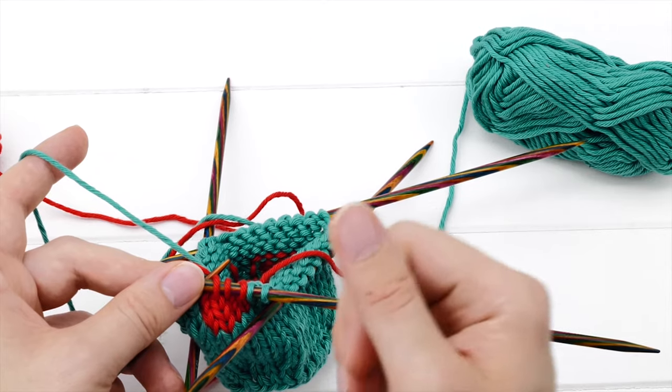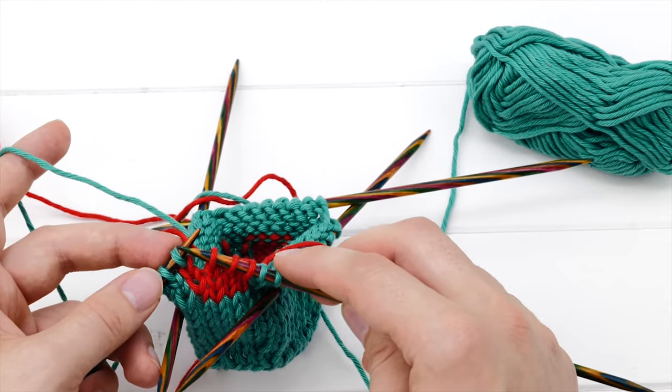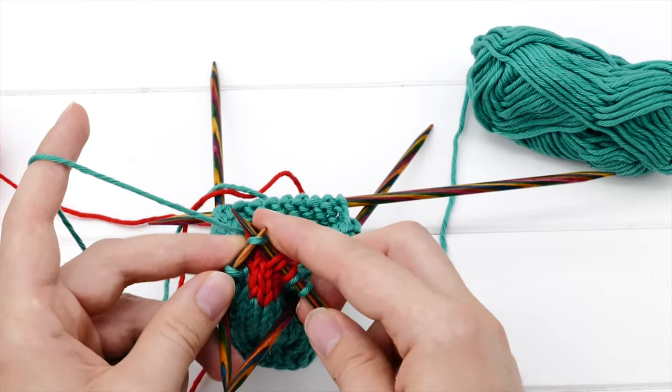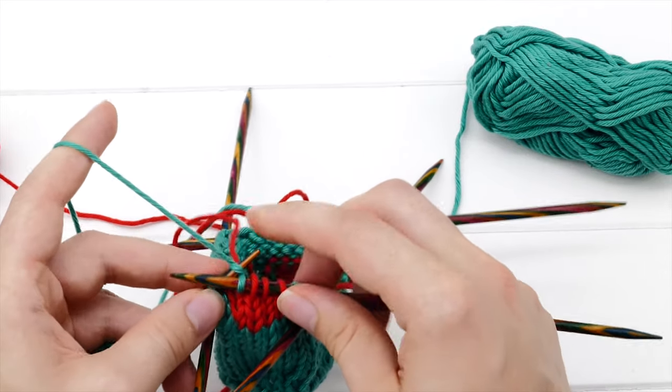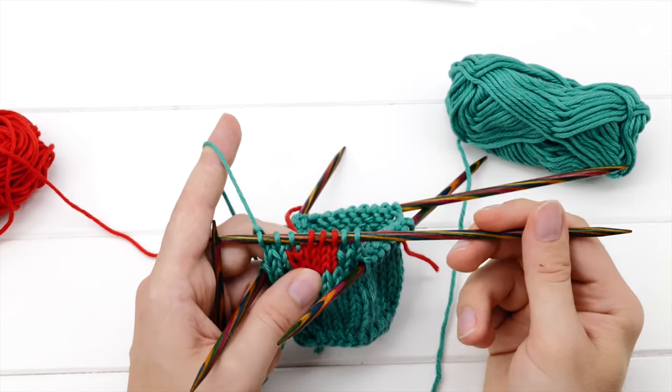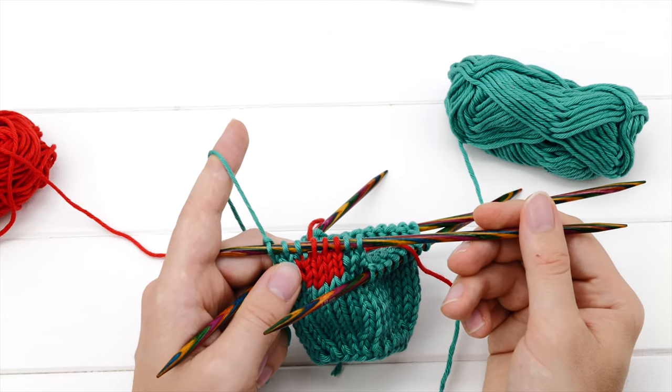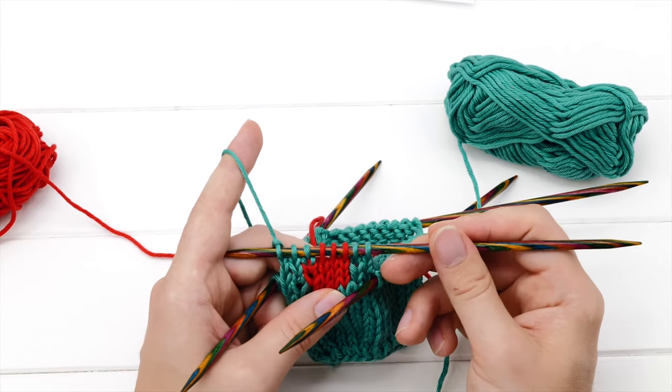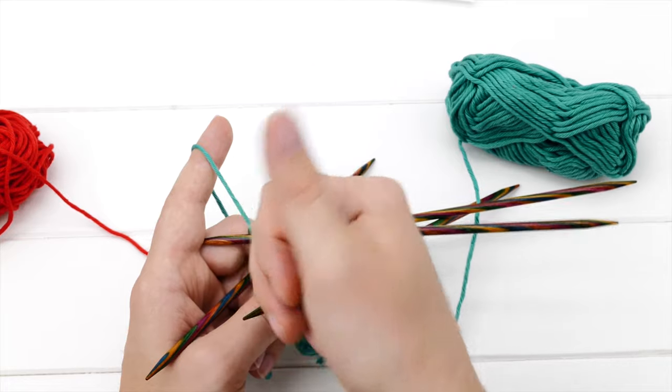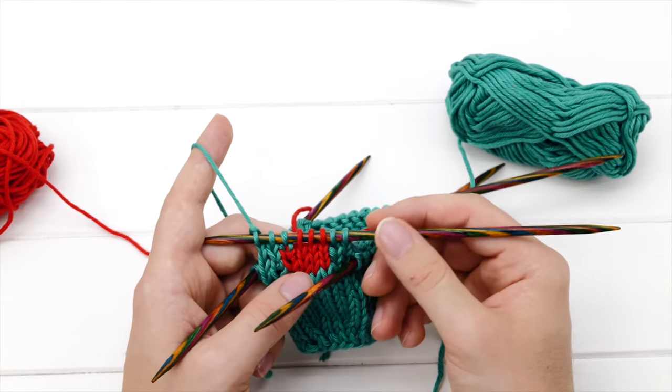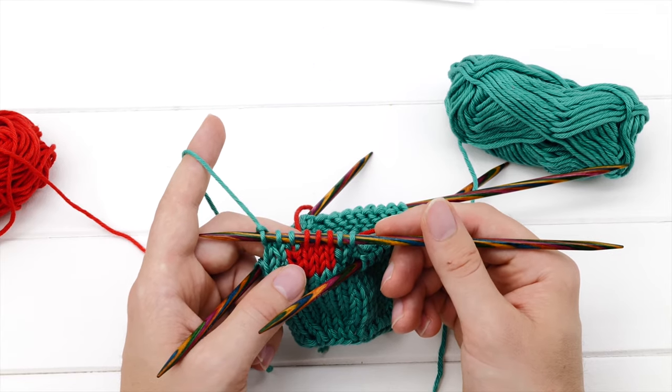Either slip stitches or plan your decreases in a way that you don't have to slip stitches and just create decreases every two rows. Anyway, that's it. That's how you knit intarsia in the round. I really hope I was able to teach you this amazing technique. Give me a thumbs up if you like this video. Comment with your questions and your feedback. And of course, consider subscribing to my channel. Happy knitting!